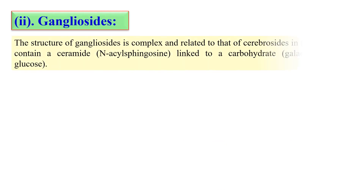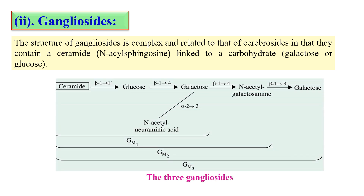Next are gangliosides. As the name indicates, these are present in the ganglion of nerve cells, and they contain a ceramide molecule which is linked to carbohydrate. Here the ceramide is attached with either glucose or galactose. These are three types of gangliosides which may have different linkages with glucose or other carbohydrate molecules.